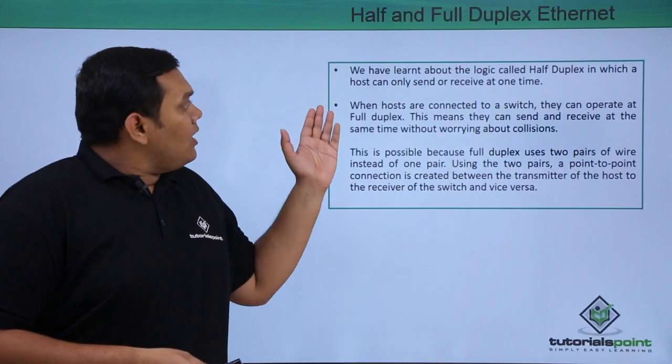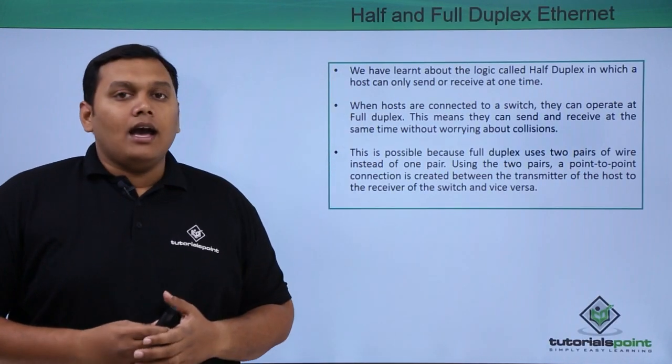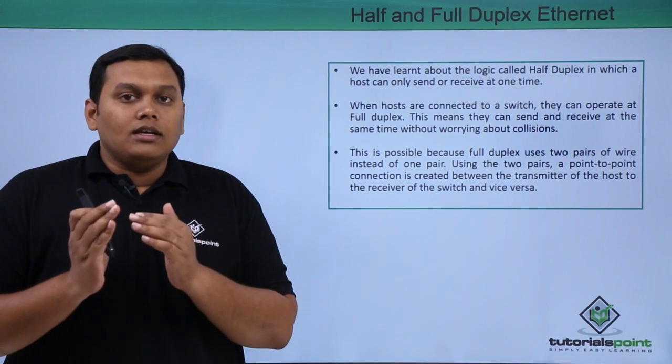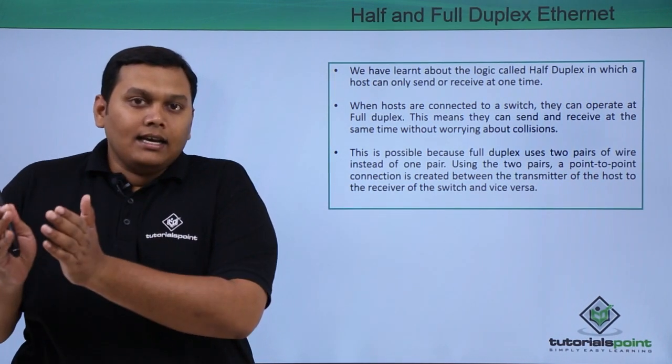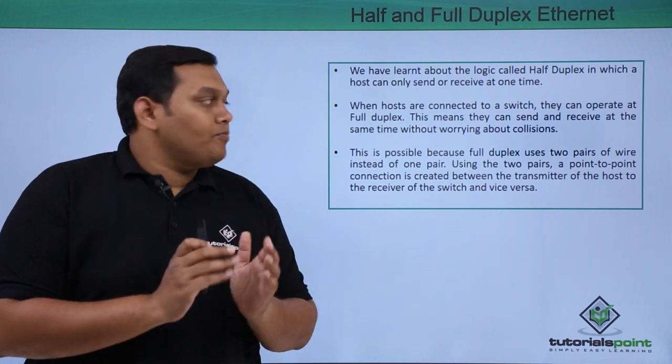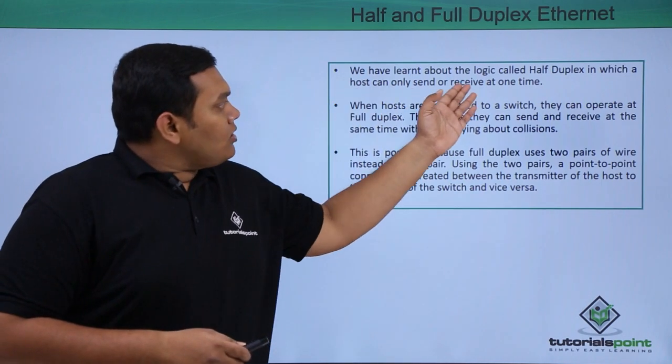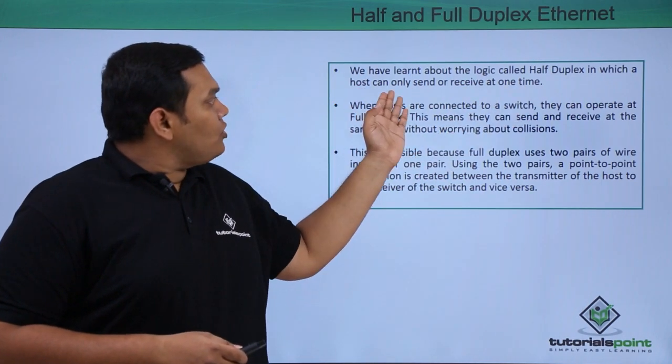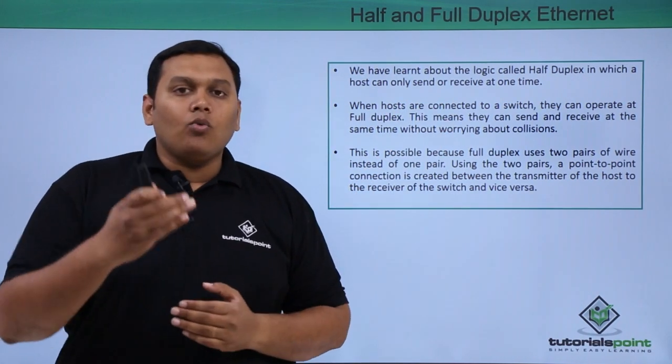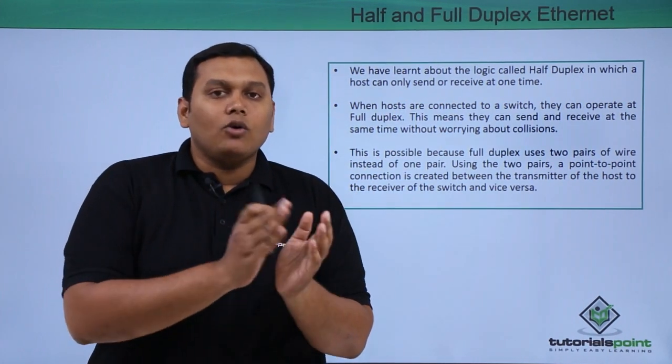What is half duplex Ethernet? Half duplex is when you can only send data or only receive data. You can see the logic called half duplex, in which a host can only send or receive at one time. The best example here is Wi-Fi.